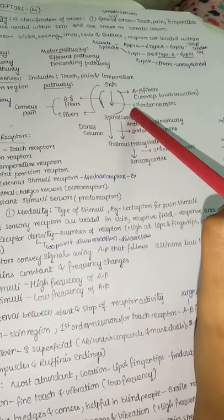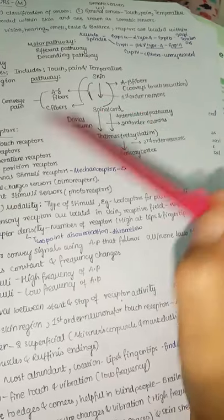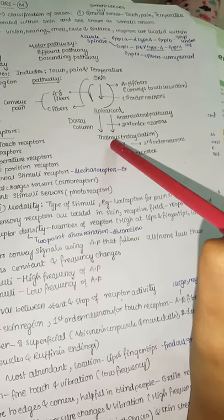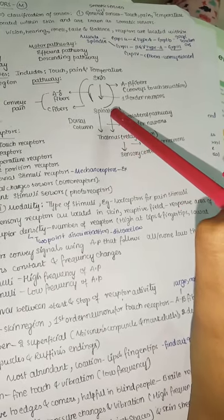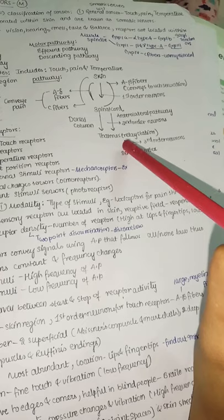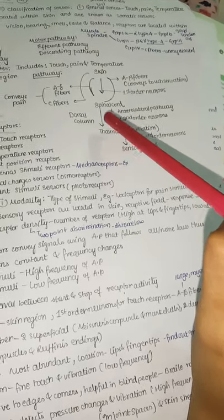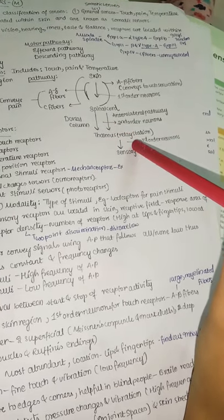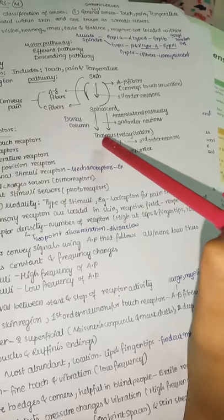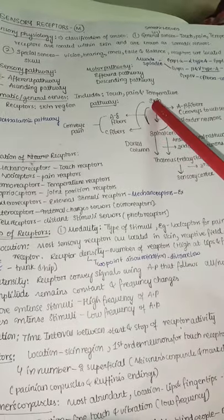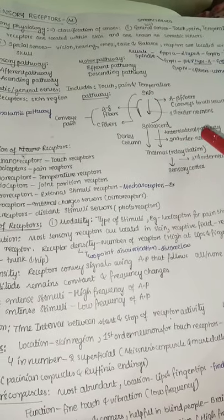First-order neurons carry information from skin to spinal cord. From the spinal cord, second-order neurons carry information to the thalamus (the relay station) via two pathways: the dorsal column pathway and the anterolateral pathway. From the thalamus, third-order neurons carry information to the primary somatosensory cortex. This pathway is called the spinothalamic pathway.